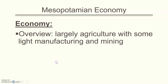Here's where we're picking up in Lecture 4 for Chapter 1: Mesopotamian Economy. Overall, really an agrarian, agricultural economy, some light manufacturing and mining for metals, some producing goods — usually pottery, weapons, that sort of thing, tools. But mostly it is agricultural; that is the wealth, that's what they're growing, that is the basis of wealth in this area.